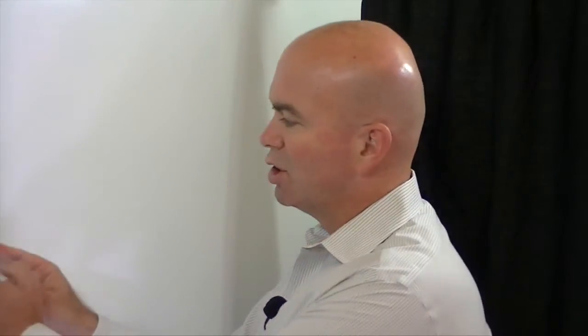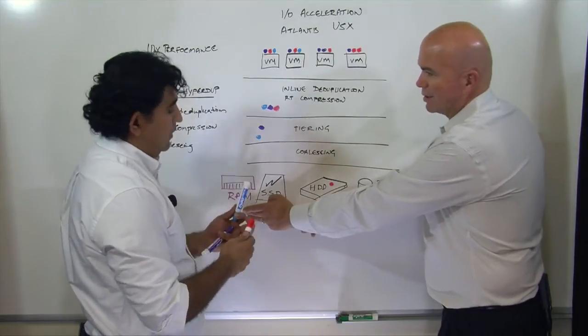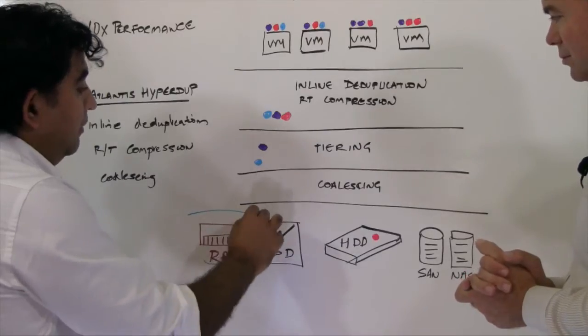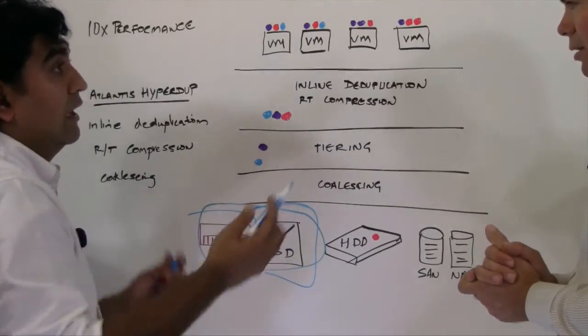And the tier that we're talking about here is a combination of RAM and SSD? Great question. Yeah, absolutely. So the tier can be RAM, or it can be SSD, or it can be both. You can leverage both of them over there.